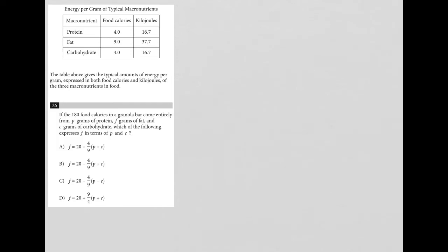So this question is a diagram question. We know that because of the table that is provided here. Anytime I have a table provided, I like to look at the title. So the title here is energy per gram of typical macronutrients.